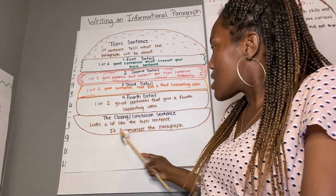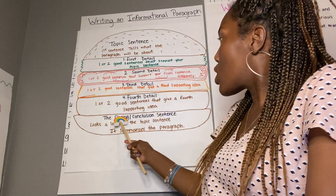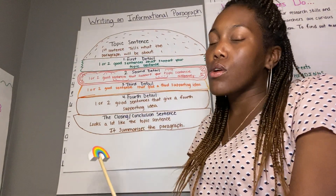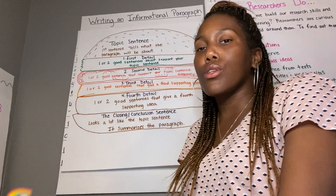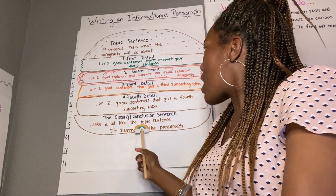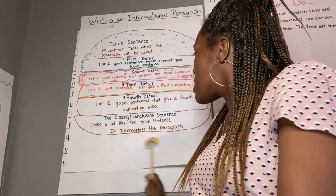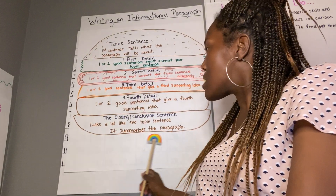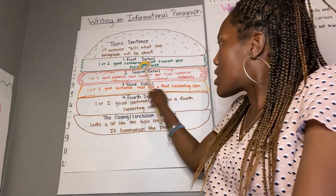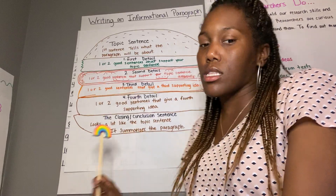And then lastly, our bottom bun is the closing or the conclusion sentence. We have the closing on our poem, but this is a little different. This is going to look a lot like our topic sentence, but we're going to say it in a different way. It's going to sum up everything that we've said with our details.